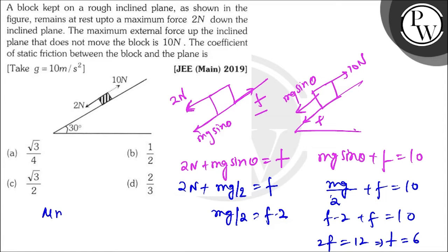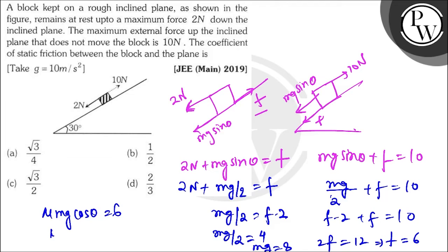So f (the limiting friction) = 6N. Now μ × mg cos θ = 6. To find mg: mg/2 = f − 2 = 6 − 2 = 4, so mg = 8. Therefore μ × 8 × (√3/2) = 6, which gives μ × 4√3 = 6, so μ = 1.5/√3.